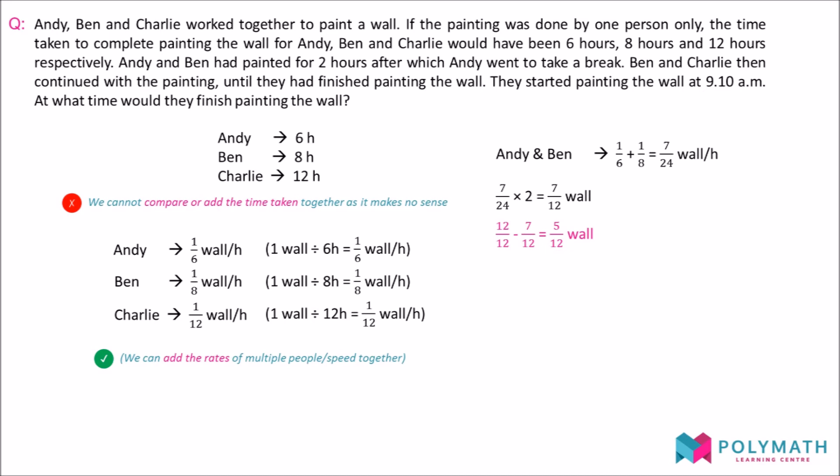We then find the combined rates of Ben and Charlie, which amounts to 5 over 24 wall per hour. Since there was only 5 over 12 of the wall that is left unpainted, we take this amount divided by 5 over 24. We get 2 hours, meaning that Ben and Charlie would take 2 hours to finish painting the remaining wall.